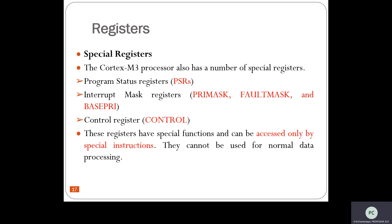The last one is the Control Register. The role of special registers is very important in microcontrollers to perform specific operations. For example, looking at the Program Status Register, it monitors the status of the program — whether a zero flag is generated, whether a negative flag is activated, whether a carry flag is activated or generated. These are the kinds of specific operations performed by special registers.